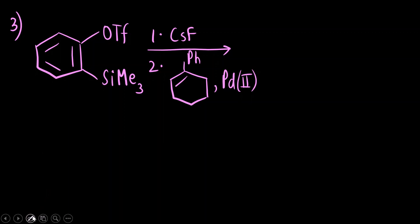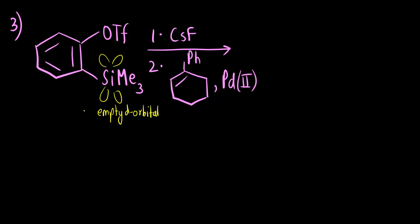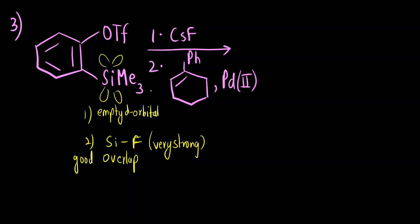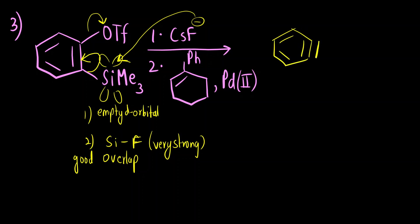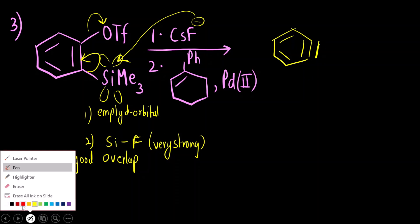Now let us see the next question. The reactant given involves silicon. First, silicon has an empty d orbital. Second, the silicon–fluorine bond is very very strong — a very strong bond because of the electronegativity difference as well as the very good overlap between the silicon and fluorine orbitals. F⁻ will donate its electrons to the empty d orbital of silicon; this bond will break. OTf is a very good leaving group. The first step is formation of a benzyne intermediate, where the benzene electrons form this pi bond.